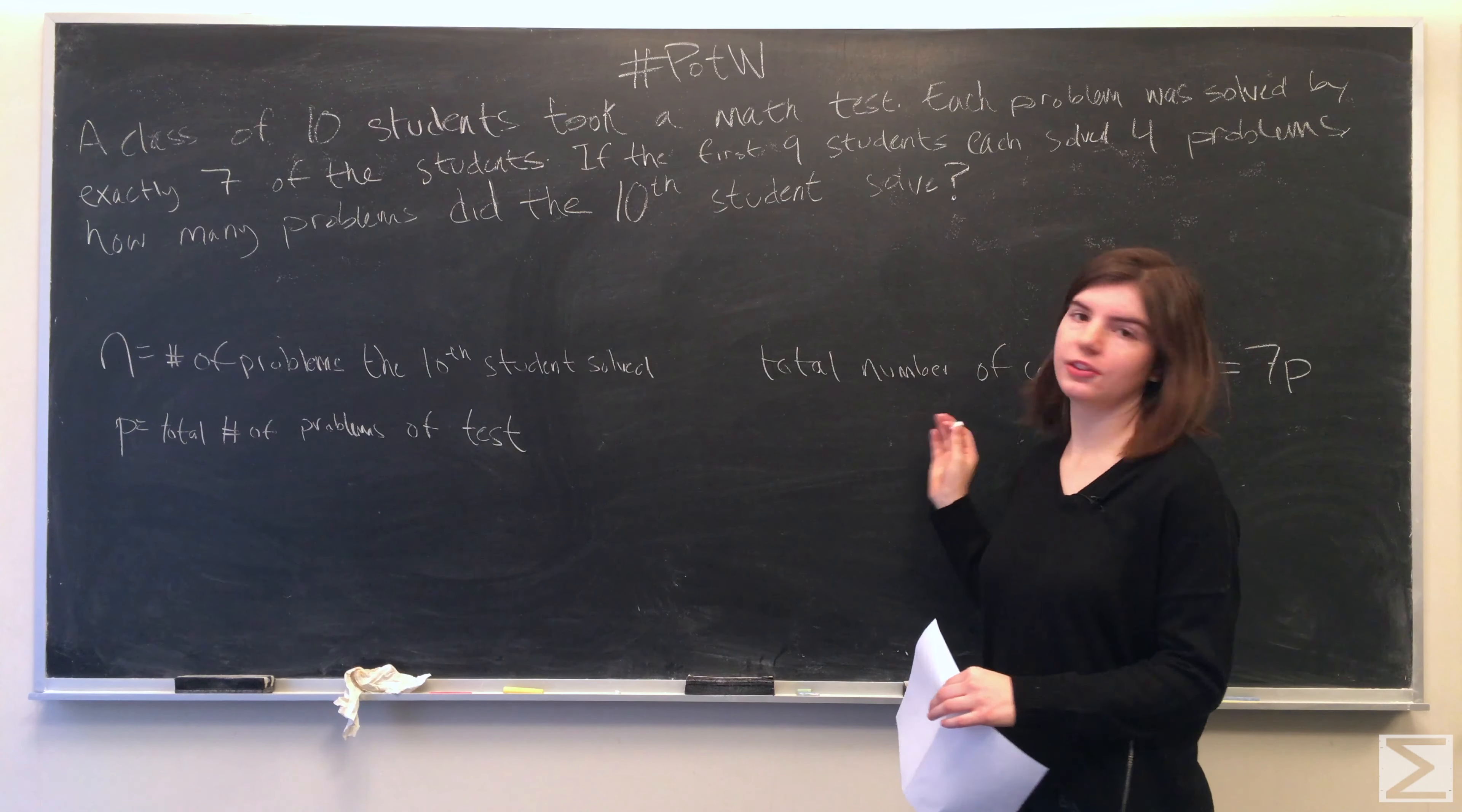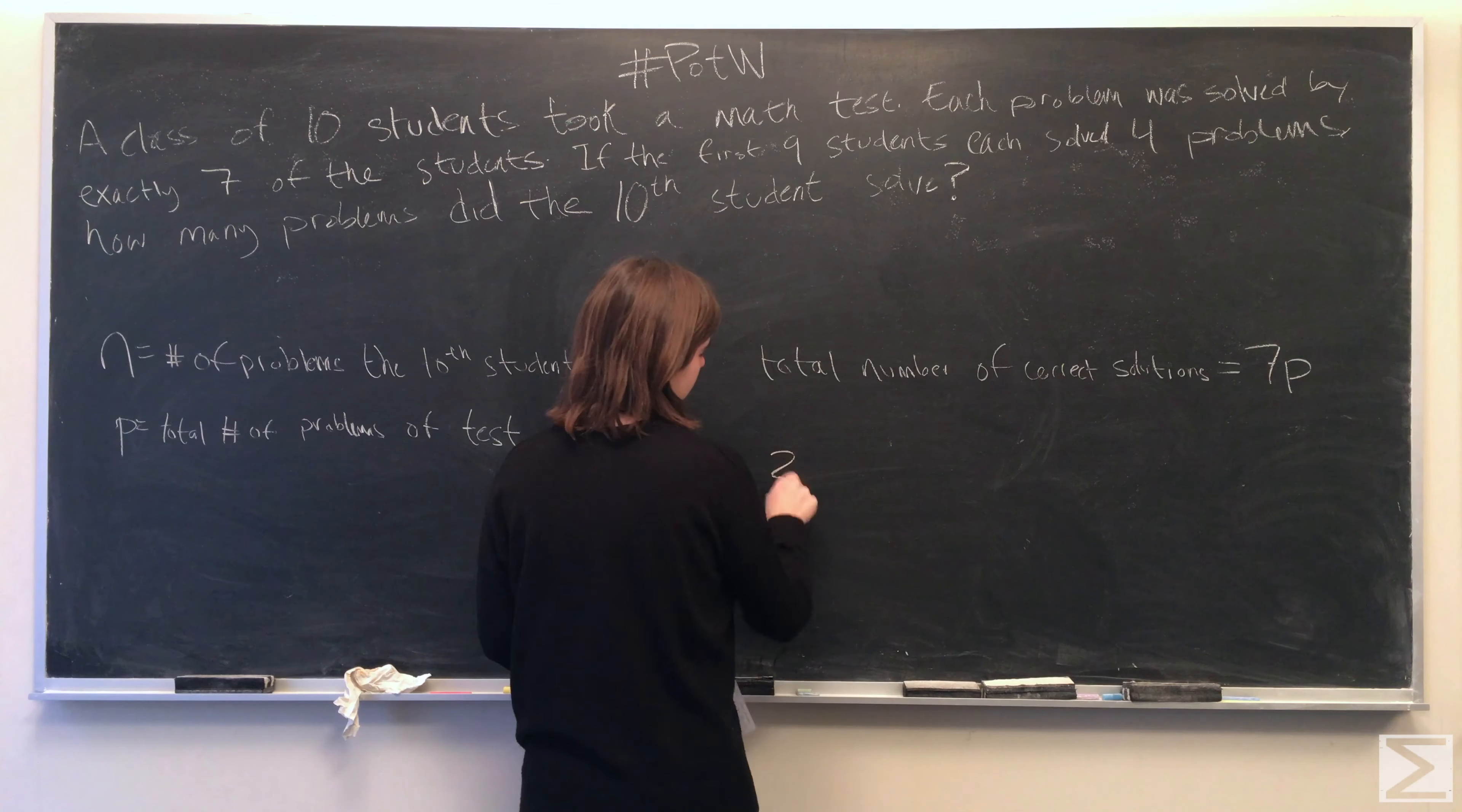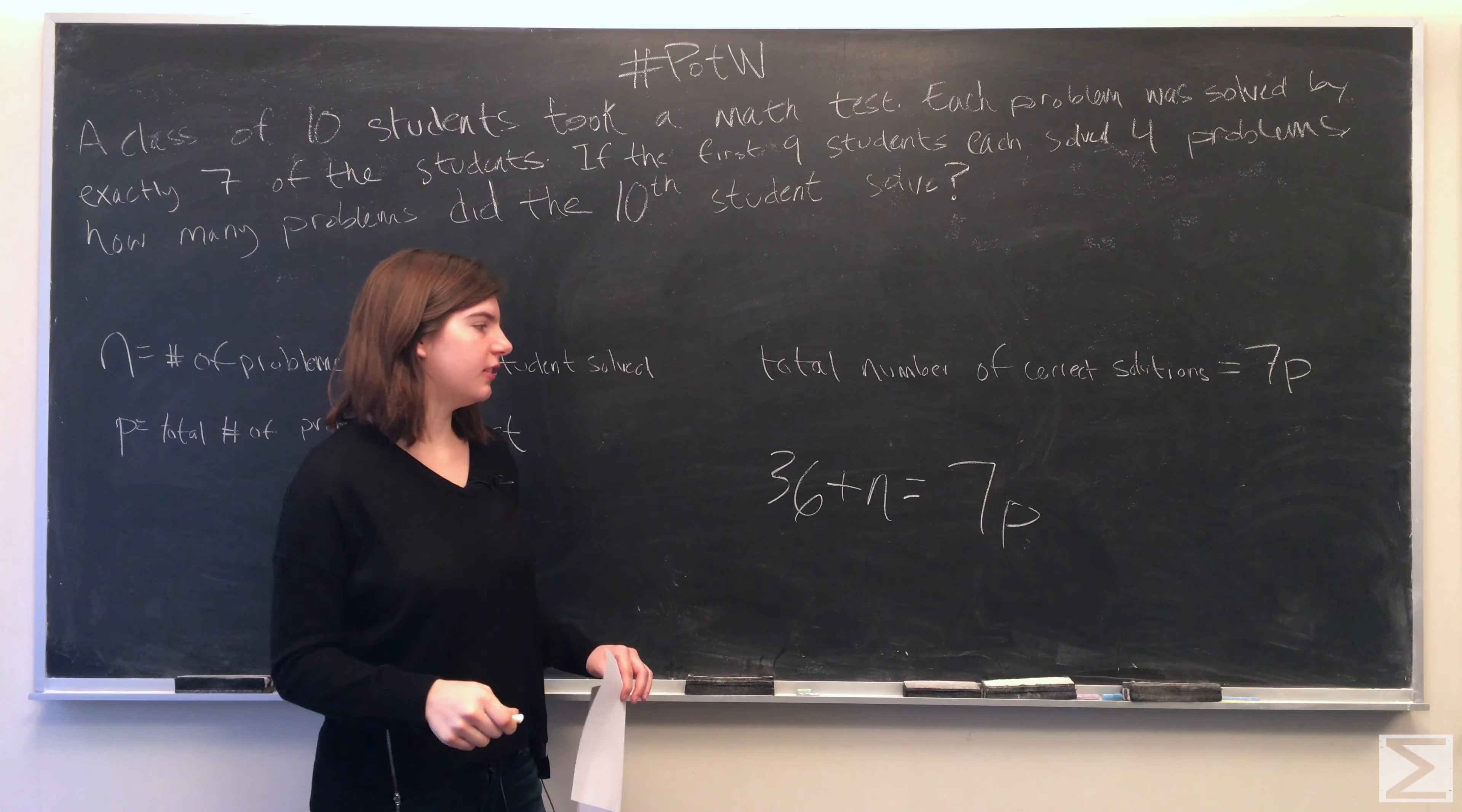The first nine students each solved four problems, so they solved a total of 36. We have 36 plus n is equal to 7p.